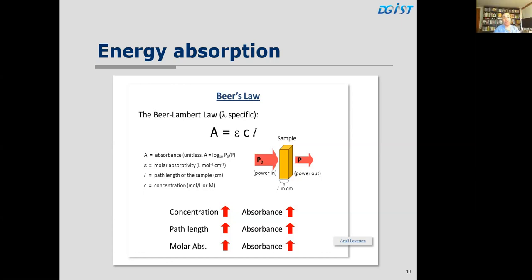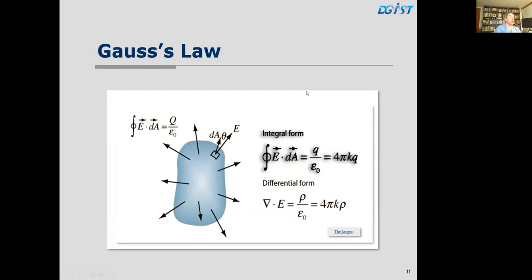In the body we have high absorption for visible light — we are not transparent to it — but very low molar absorptivity for X-rays, so X-rays go through the body very easily. When we do calculations in electromagnetism, we typically use Maxwell's equations. One of the most important is describing the electric field around a charge distribution — that's Gauss's law, which states that the electric field flux around a surface around a charge distribution equals the charge distribution divided by a constant.